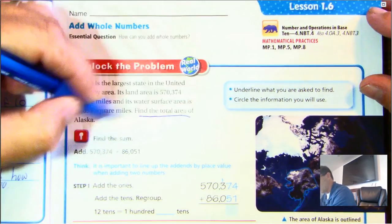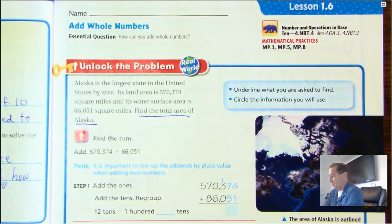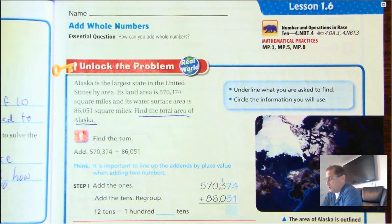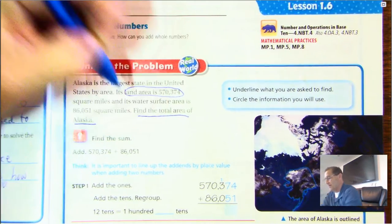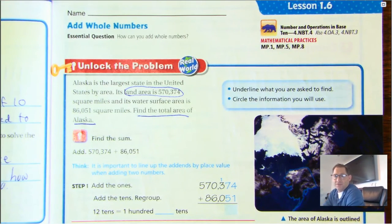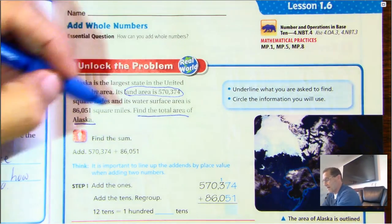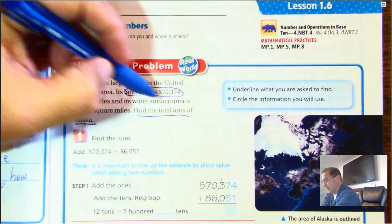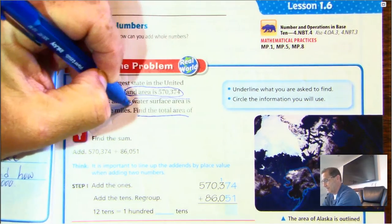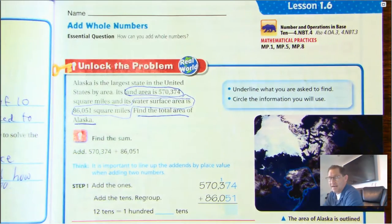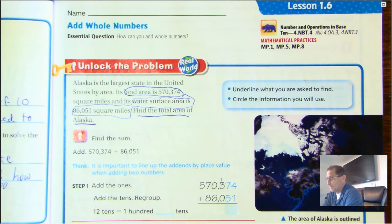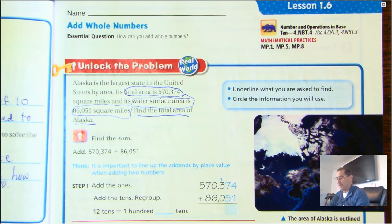We have to find the total area of Alaska. We know it has a land area of 570,374 and a water surface area of 86,051. Whenever we're adding, it's important to line up the addends by place value.